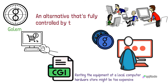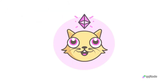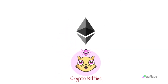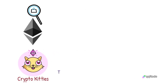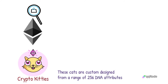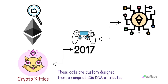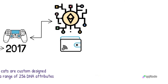Another popular decentralized application is CryptoKitties. CryptoKitties is an Ethereum-based game that allows users to collect, buy, and sell digital cats. These cats are custom designed from a range of 256 DNA attributes. CryptoKitties immediately became a smash hit in 2017, the same year the game was released. There have been cases of CryptoKitties congesting the Ethereum network. To play CryptoKitties, you must hold Ether in your wallet.